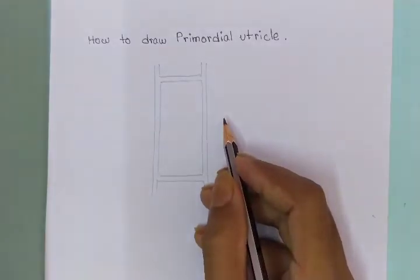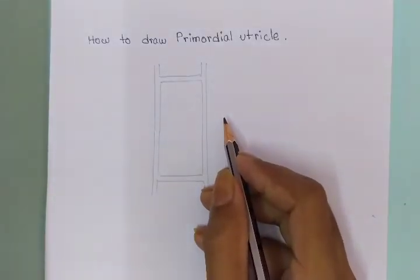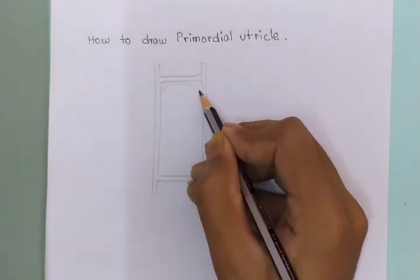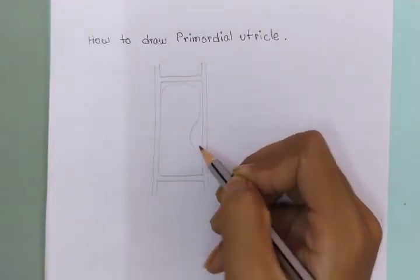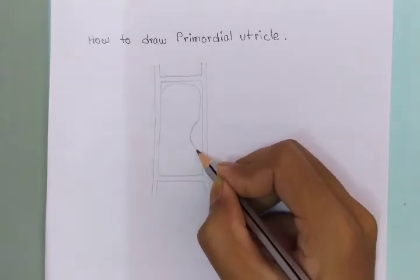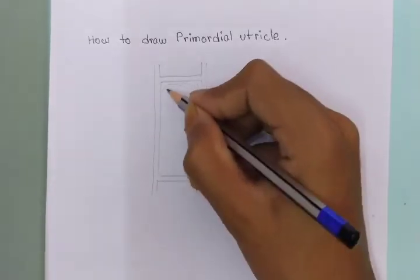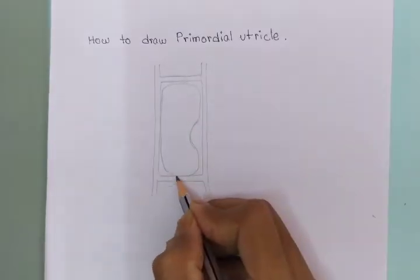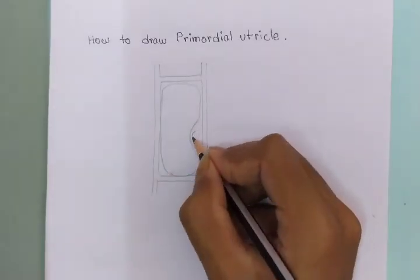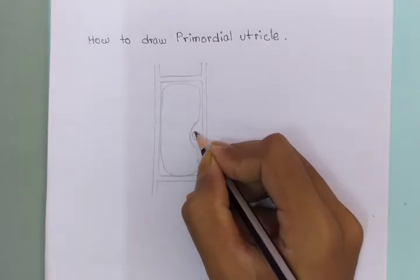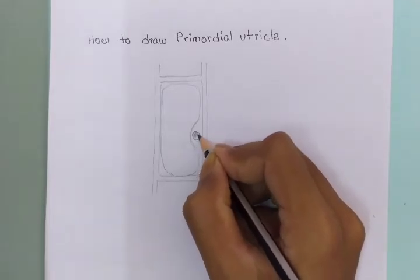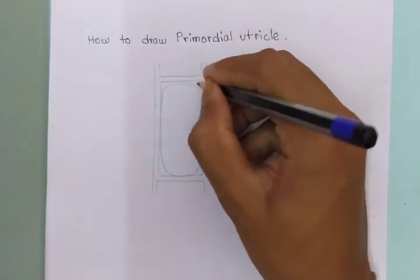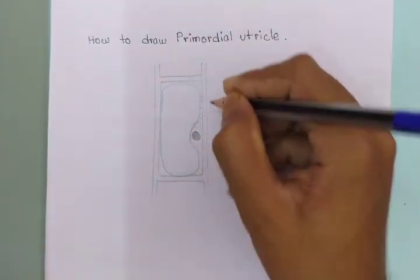Now we will draw the vacuole and the cytoplasm in this way. Here we will make a notch like this, and again this way. Here we will draw the nucleus and we will darken it, and we will make some dots on this part.